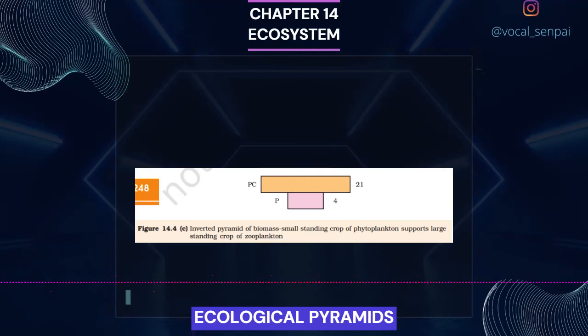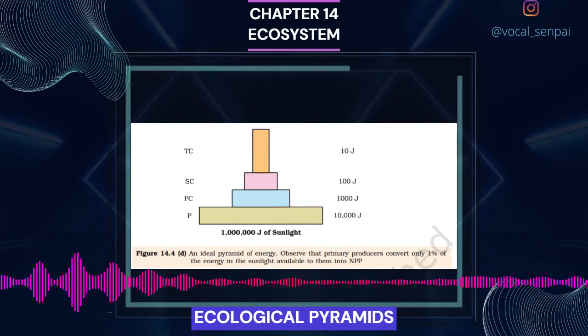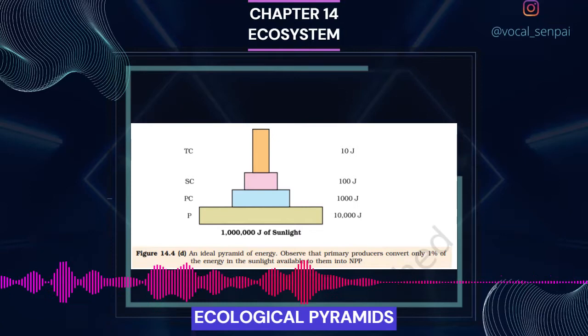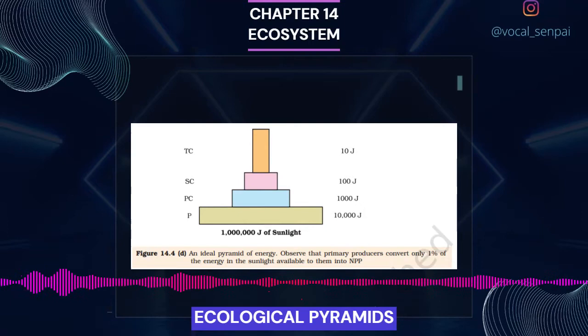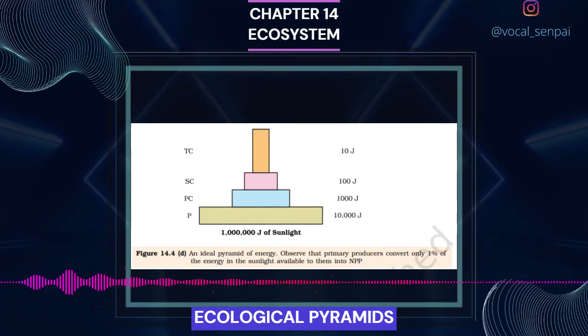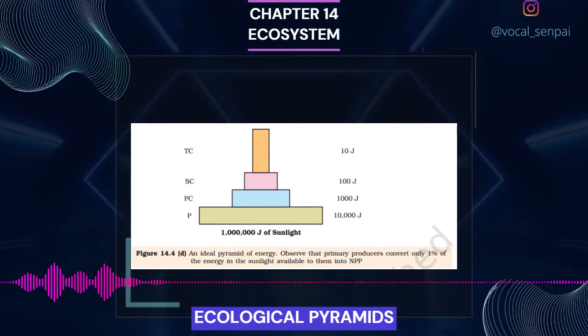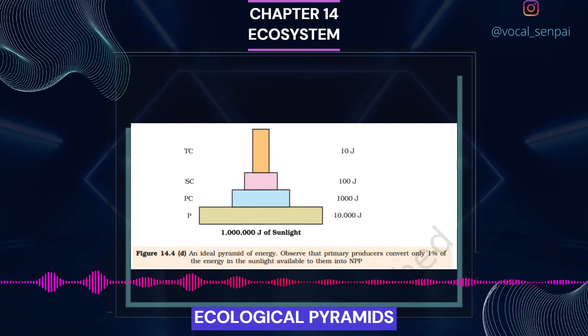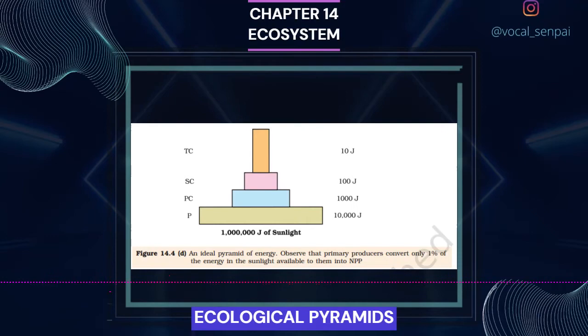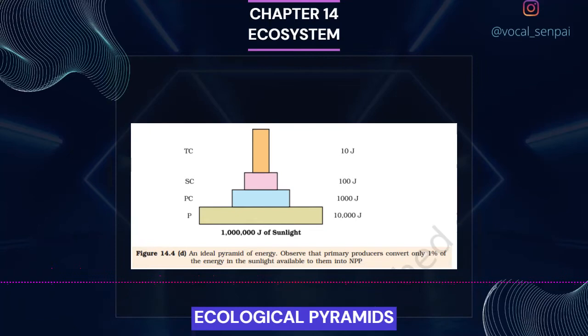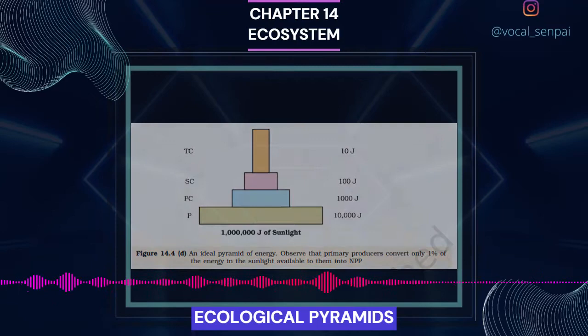Pyramid of energy is always upright and can never be inverted, because when energy flows from a particular trophic level to the next trophic level, some energy is always lost as heat at each step. Each bar in the energy pyramid indicates the amount of energy present at each trophic level in a given time or annually per unit area. However, there are certain limitations of ecological pyramids, such as it does not take into account the same species belonging to two or more trophic levels. It assumes a simple food chain, something that almost never exists in nature — it does not accommodate a food web. Moreover, saprophytes are not given any place in ecological pyramids even though they play a vital role in the ecosystem.